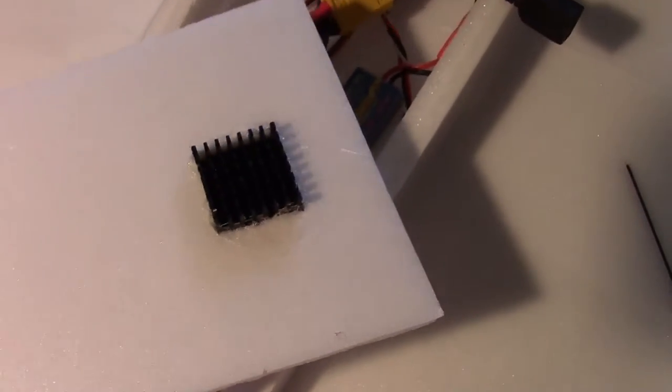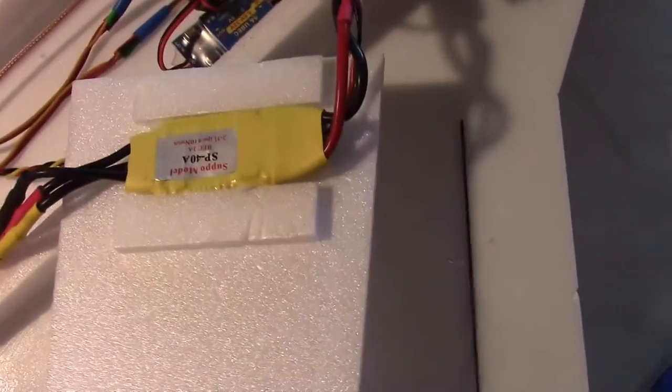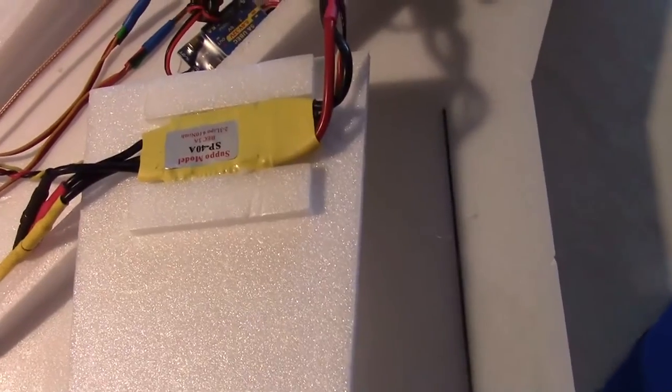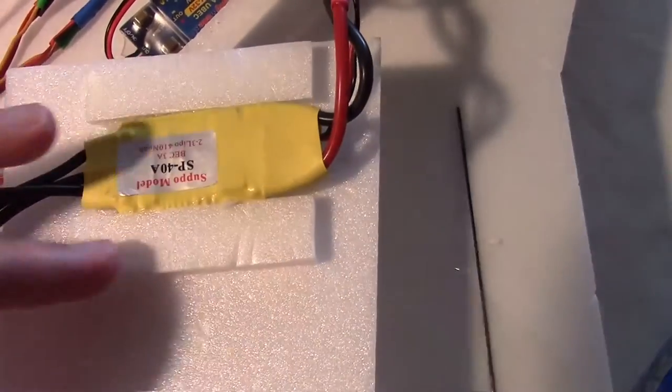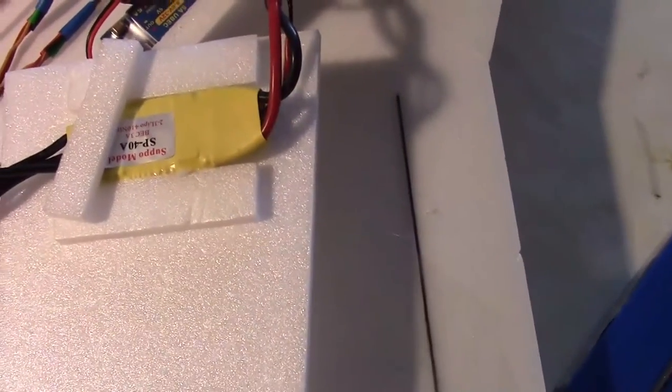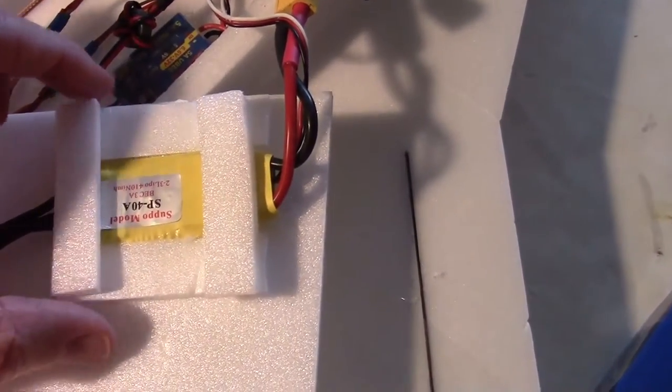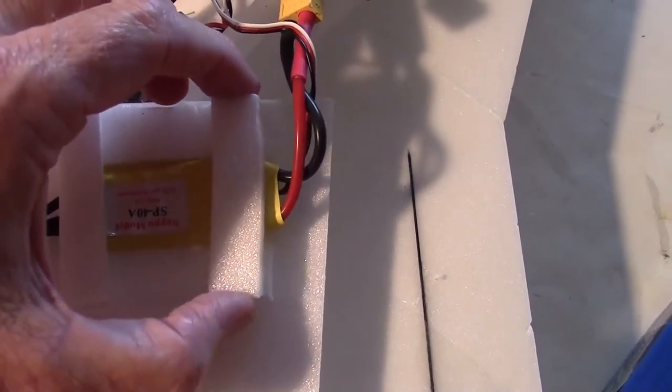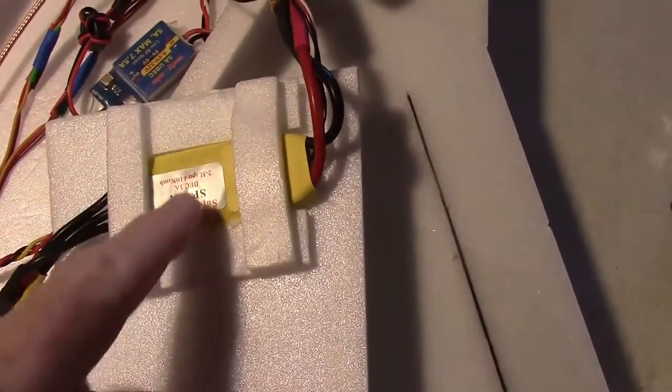So here's the ESC after it dried. There's the heat sink. And the ESC is on the bottom here. And what I'm going to do now, to further hold the ESC in, is I've put a couple strips of Depron here. And then I'm going to put one across here. And one across here. And glue that down with some CA. Just to hold the ESC in place. I've got the Depron strips glued down over the ESC right there.